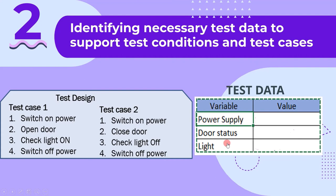Creation of test data is done in the test implementation stage. Most of the time people go wrong here, so please be very careful. The identification of test data is done in the test design stage, whereas creation of test data is done in the test implementation stage. The second activity of test design is identifying necessary test data to support test conditions and test cases.